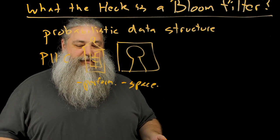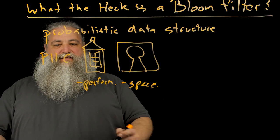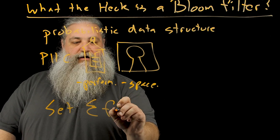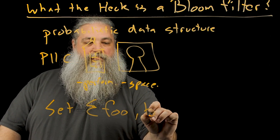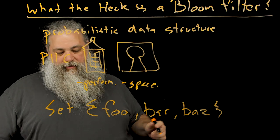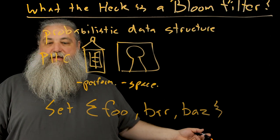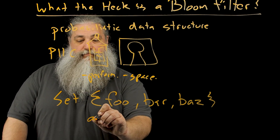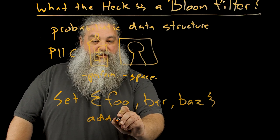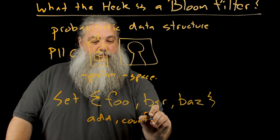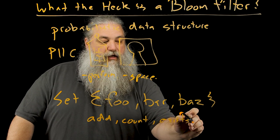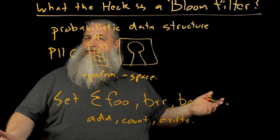A bloom filter is a type of probabilistic data structure that kind of acts like a set. So if you think of a set in a mathematical sense, you've got a set here. It's maybe got values foo, bar, and baz in it. And on this set we can do things. We can add things to a set. We added foo, bar, and baz just now. You can count the things in a set. You can check and see if something exists in a set. You can remove things from a set. These are things that you can do on normal sets.